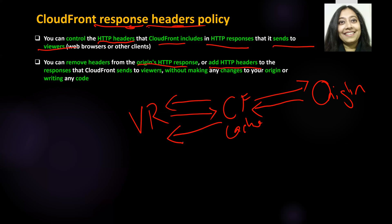To summarize: the first two policies are request-side — the cache policy improves cache hit ratio, and the origin request policy comes in during a cache miss to retrieve the object from the origin while allowing you to add additional information while keeping the cache key minimal. The response headers policy is for the response side — if you want to manipulate, add to, or remove something from your origin's HTTP response before sending it back to the viewer, you can use the response headers policy.